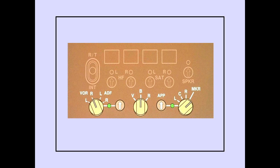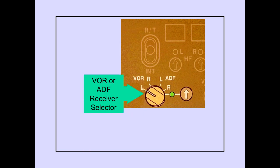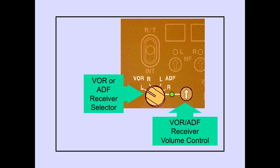Monitor navigation equipment audio controls are also located on the audio panel. The VOR ADF selector is used to select the left or right VOR or ADF. The receiver selector allows the NAVAID to be monitored.